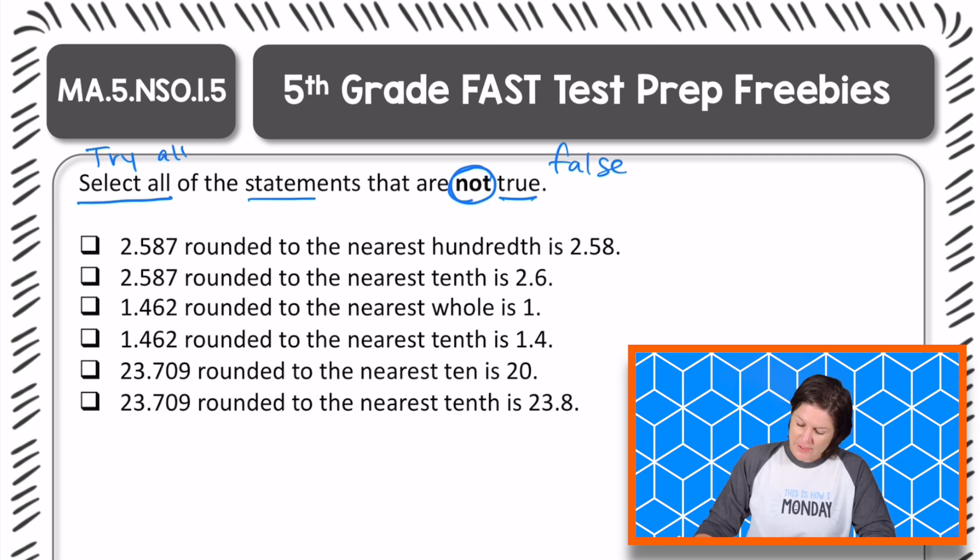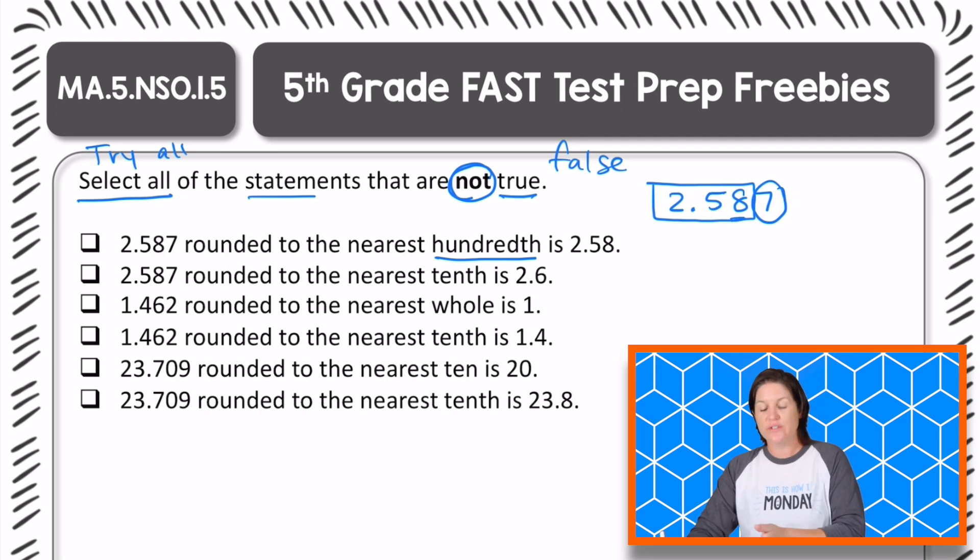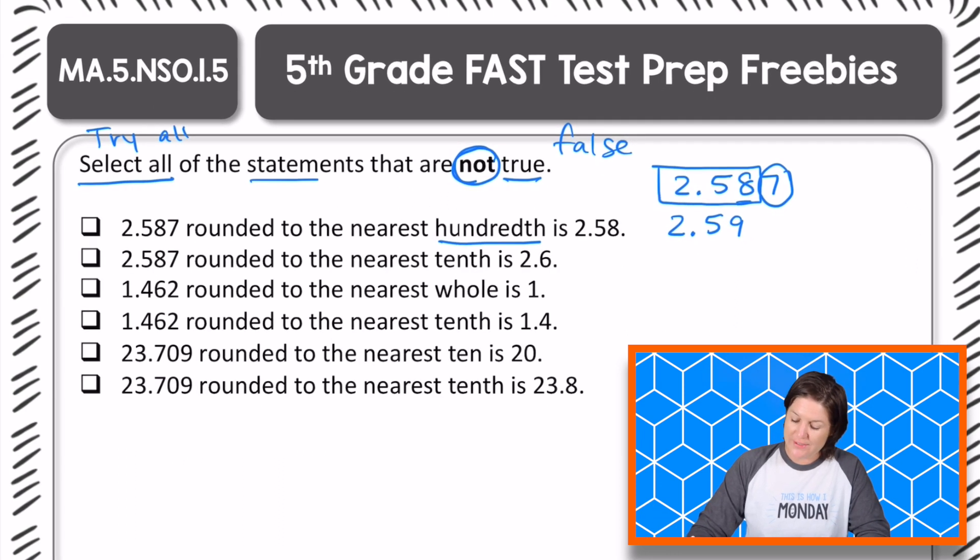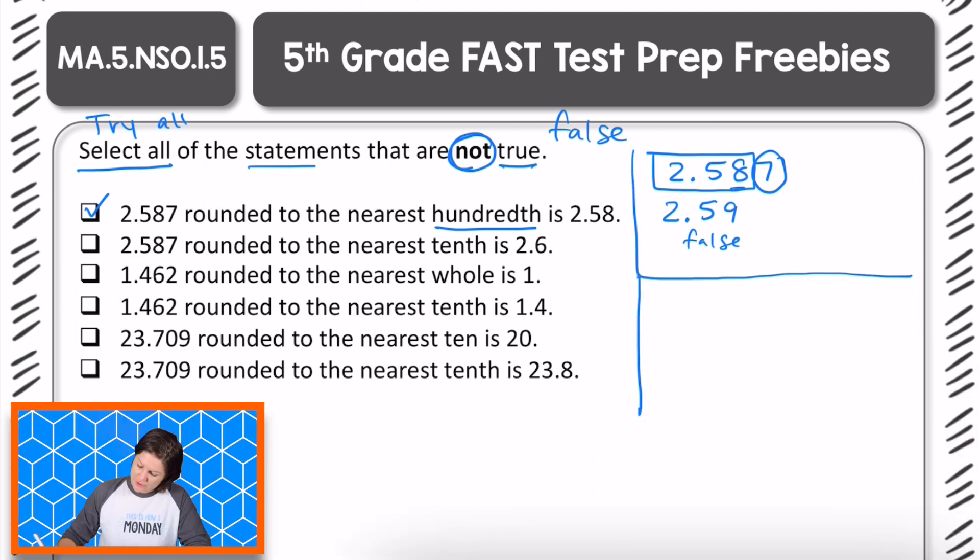All right, welcome back. Let's go over this. So we've got some rounding going on. The first one says 2.587 rounded to the nearest hundredth is 2.58. The eight is the digit in the hundredths place, so we have 2.58 hundredths, but next door we have seven. So this goes beyond our halfway mark. So no, this would actually round to 2.59 hundredths. So this one is false, which is an answer that we want, right? Because we're looking for the ones that are not true. So the first one is not true, therefore we're selecting it.